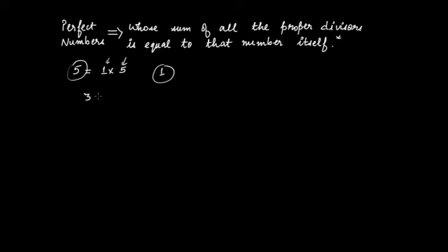What about three? Three is also a prime number and can be written as one times three. The only proper divisor of three is one, and one is not equal to three. So three is also not a perfect number. Neither five nor three are perfect numbers.